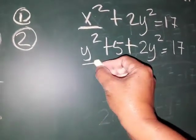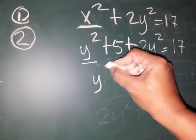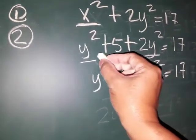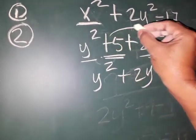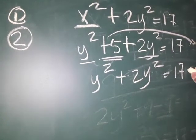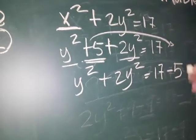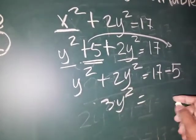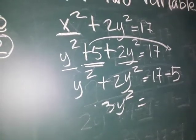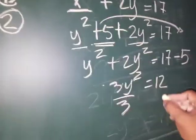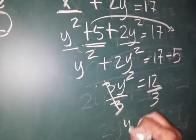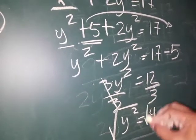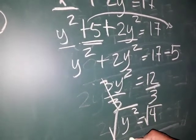Combine like terms — we have y squared and 2y squared. So y squared plus 2y squared, copy 17, and positive 5 transposes over the equal sign to become negative 5. Now we have 1y squared plus 2y squared — that's 3y squared is equal to 17 minus 5, which is 12. Divide by 3 on both sides — cancel. So y squared is equal to 4.